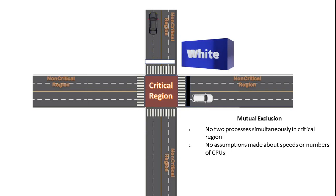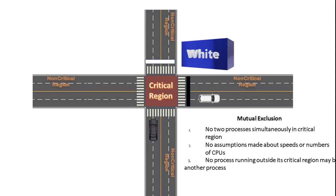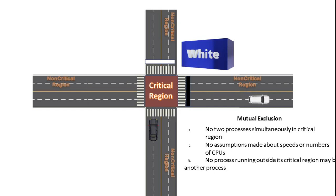So it is a way to access the critical region, but it is not a good mutual exclusion. Think about a case where the white car will spend a lot of time in its non-critical region — it will block the black car from entering its critical region. This violates the third condition, so we need another solution.